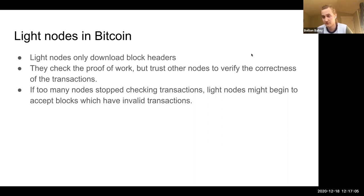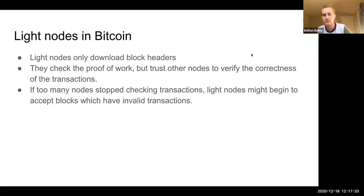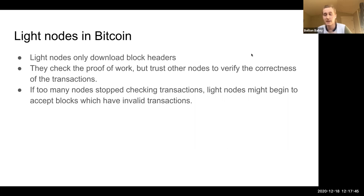This poses a risk because if too many nodes stop doing these checks and there are blocks that are actually incorrect, light nodes might think those bad blocks are good. They might think someone had given them Bitcoin when they actually didn't receive any. For that reason, most people would say it's important for as many nodes as possible to be doing these checks. That's the drawback of running a light node as opposed to a full node.